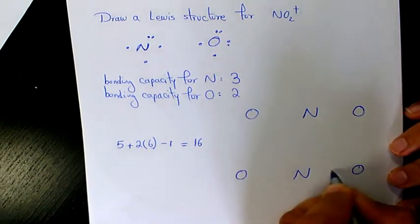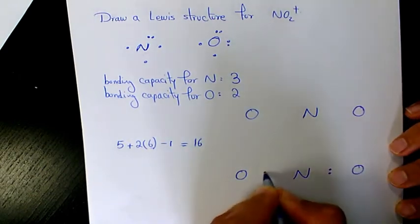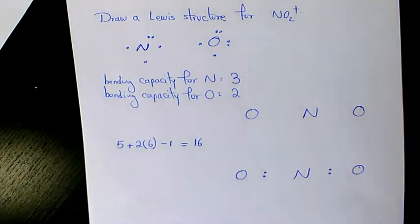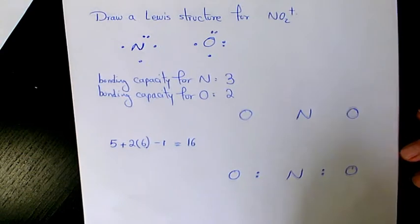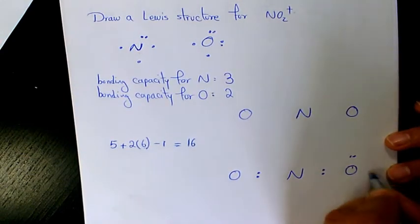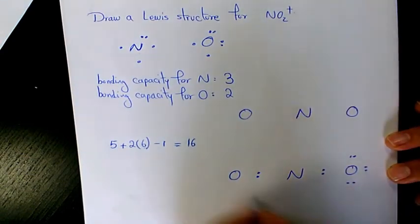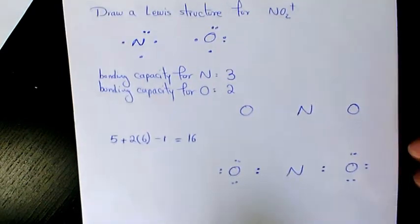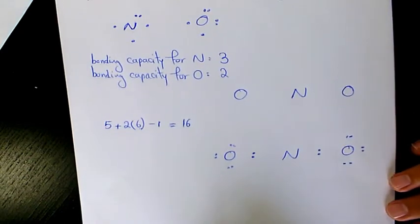So what we need to do, I need to put this bonding electrons and then I need to place pairs of the remaining valence electrons as lone pairs.